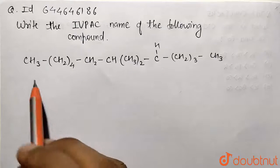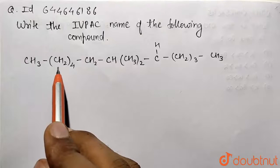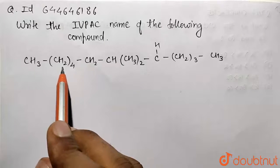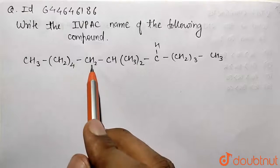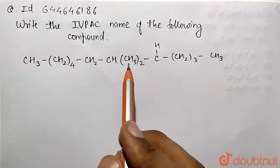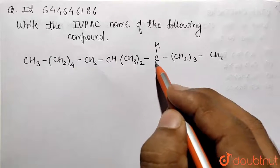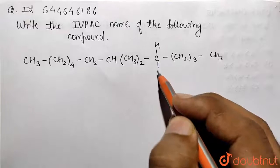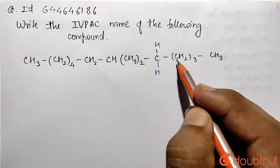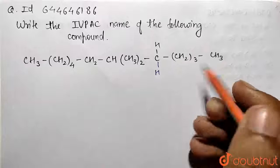The structure has CH3, then four CH2 groups, then CH2, then CH with two methyl groups, then CH2 (with two hydrogens to satisfy valency), then three more CH2 groups, then CH3.